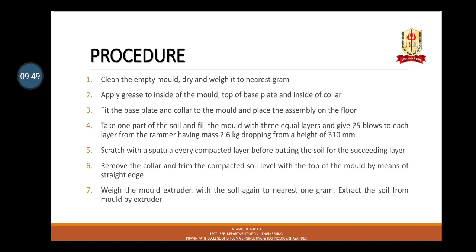Determine the moisture content of the representative sample. Repeat the above steps using 2–3% more water than the preceding specimen. Calculate the bulk density of the compacted soil for each test, and calculate the corresponding dry density and water content. Draw a curve showing the relationship between moisture content and dry density. Find the dry density corresponding to the maximum point of the curve and the corresponding moisture content.